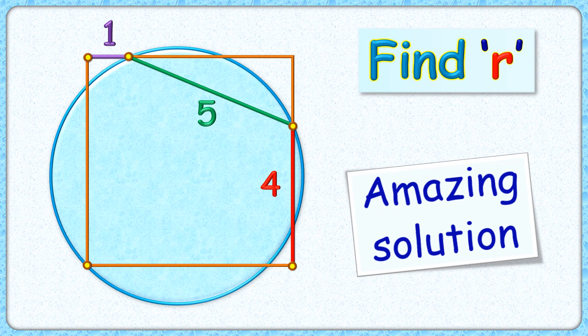Wow, this is a really interesting question. We're given a square and a circle, and the lengths of the purple, green, and red line segments as 1, 5, and 4 centimeters. The exciting part is with this limited data, we have to find the radius of the circle.